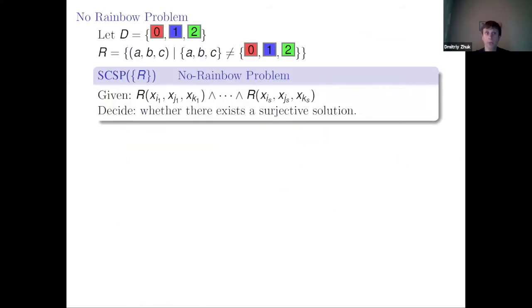Now: the no rainbow problem. This time we have three elements zero, one, two — or think of three colors red, blue, and green. I define the ternary relation R consisting of all tuples such that not all elements are different. That is why it is called 'no rainbow' — if all colors are different it is a rainbow, and this relation forbids that.